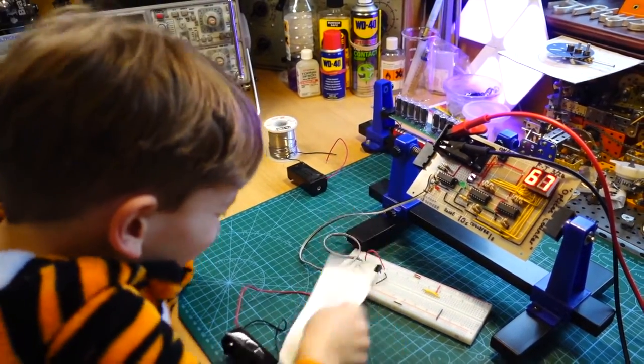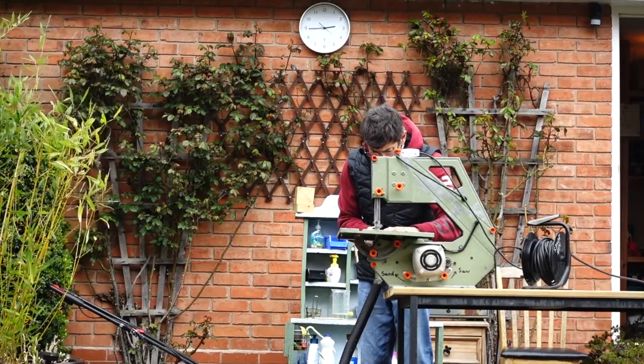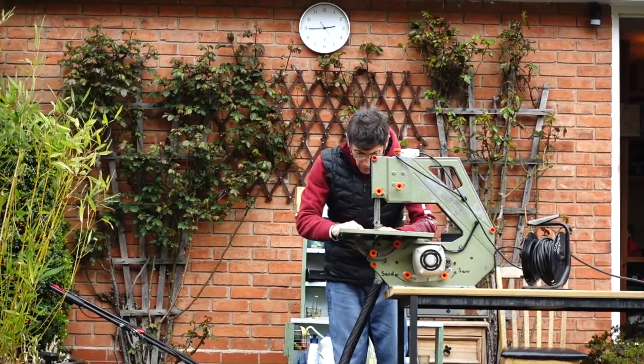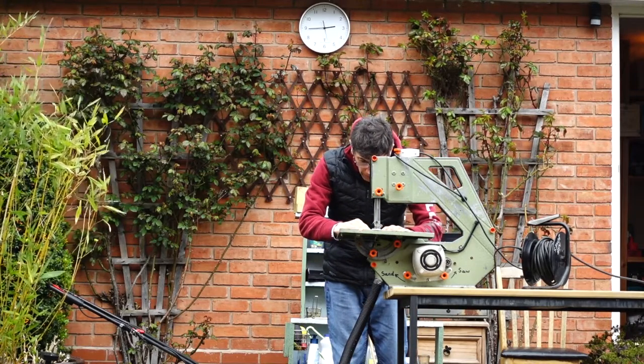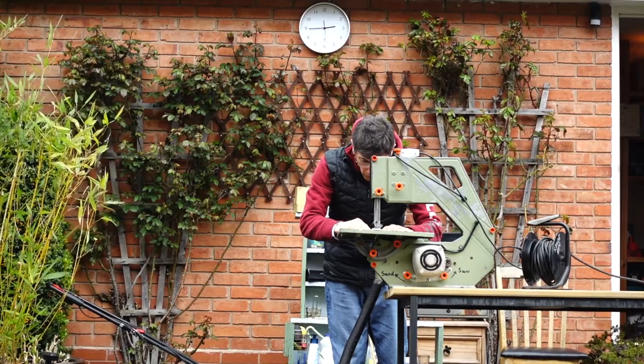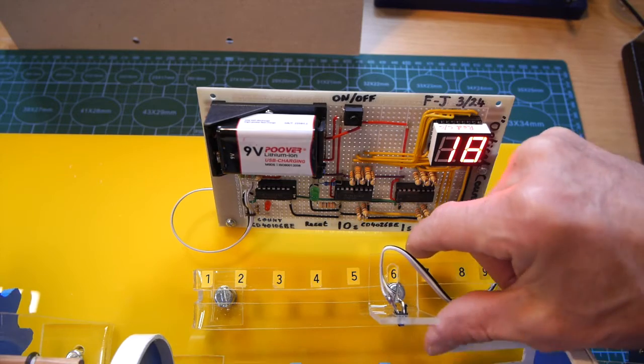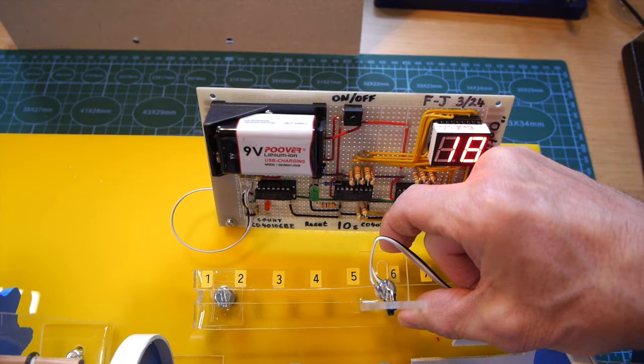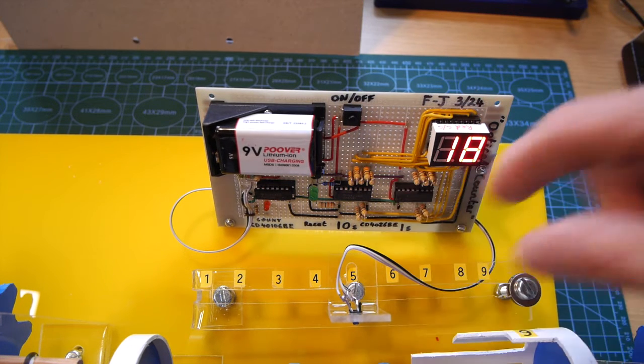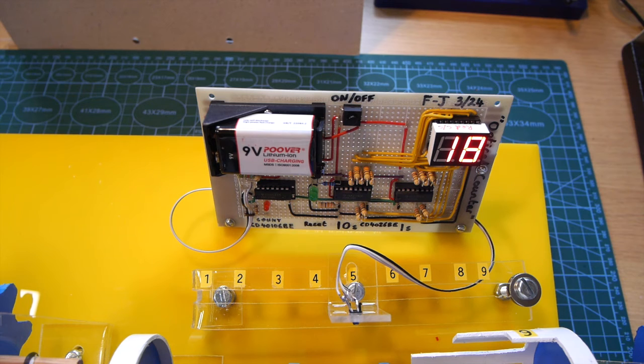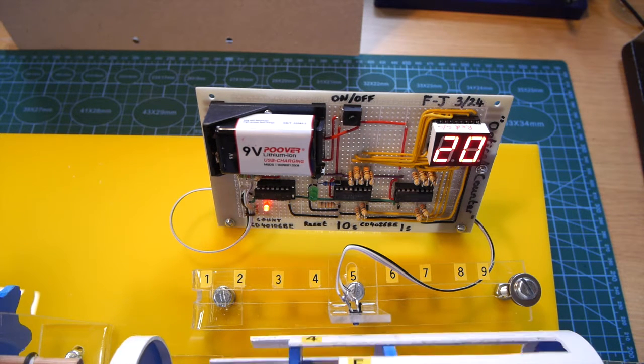Once that was all working it was back to the bandsaw to cut out a mount for the sensor so I could move it up and down to different positions on the Leibniz wheel. Not totally happy with what I've done there. It's not very easy to move. But it's enough to demonstrate what we're doing. So the optical sensor can be in the right position for the teeth on the Leibniz gear and also it can send pulses back to the counter board.